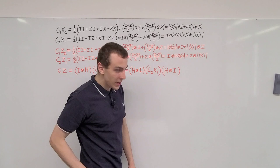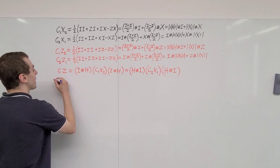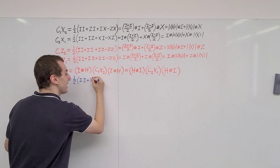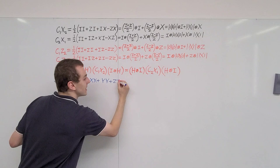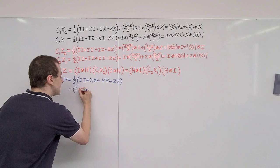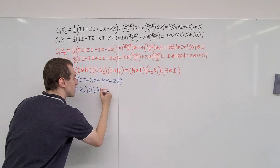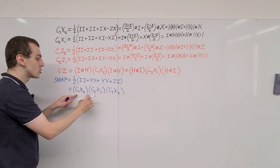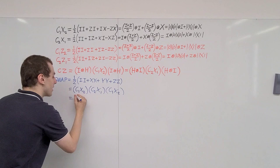Now let's look at the swap gate. The swap gate has the following Pauli tensor product representation: one-half times (II + XX + YY + ZZ). We can write this as a product of three CNOT gates: C1X2 · C2X1 · C1X2. What we're doing is sandwiching the flipped CNOT gate C2X1 between two C1X2 gates.